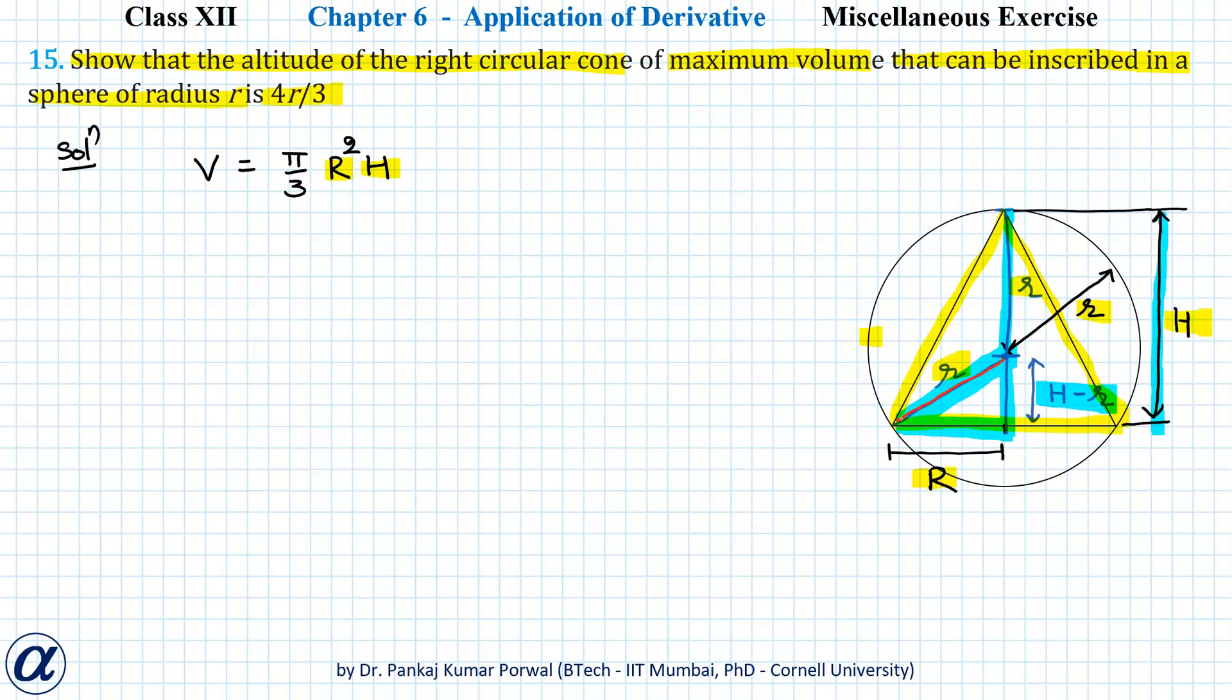So in this right angle triangle I can write r² = R² + (H - r)², or r² = R² + H² + r² - 2Hr. Here this r² will cancel this r². So this gives me R² = 2Hr - H².